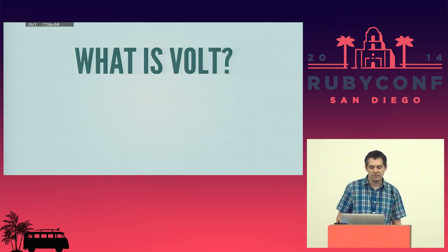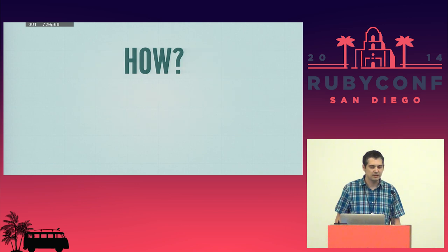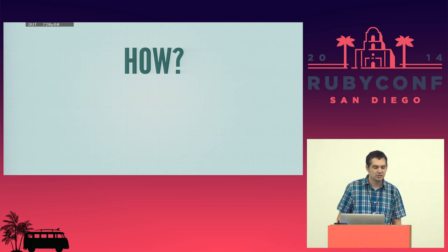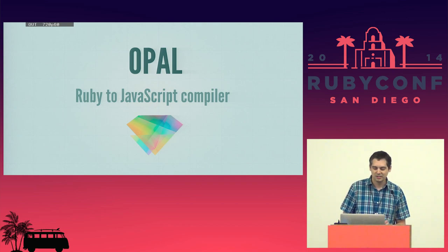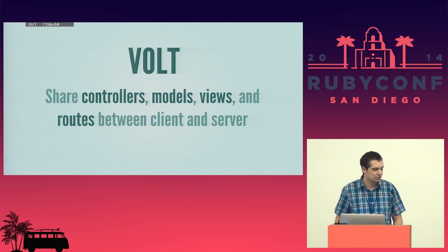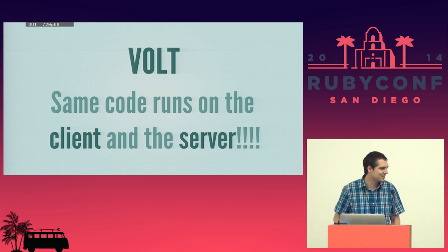For those who haven't heard of Volt, it's an isomorphic web framework for Ruby. You're probably thinking: how can you write an isomorphic framework in Ruby? JavaScript is the language of the browser. We're actually using a project called Opal, which takes Ruby code and compiles it to JavaScript. You can write normal Ruby code and compile it to JavaScript. Volt lets you, through Opal, share controllers, models, views, and routes between the client and the server — the same code runs on both.